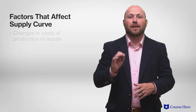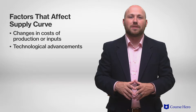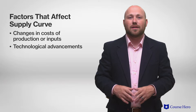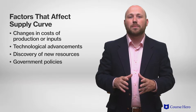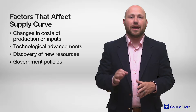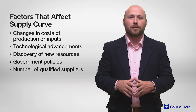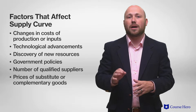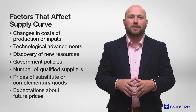There are a variety of factors that could shift the entire supply curve and affect a provider's willingness to supply products to a market. Some of those include a change in the cost of production or inputs, technological advancements in the production process, the discovery of new resources, government policies like taxes or subsidies aimed at changing production levels, the number of qualified suppliers, the price of substitutes or complementary goods, and expectations about future prices of the product.